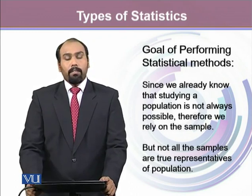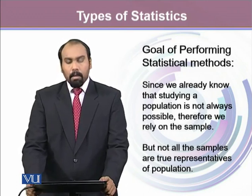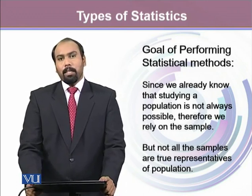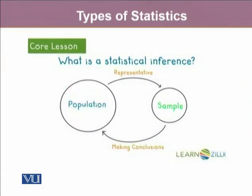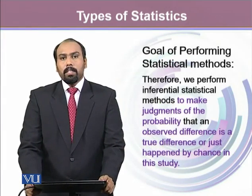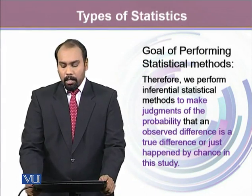Therefore, we rely heavily on our samples. But not all the samples are made equal — some samples are true representatives and some are not. Therefore, look at this process where we have a large population, and from the population we take up a random sample which is representative. And then we make conclusions regarding the population from the sample, and that's what we call statistical inference.